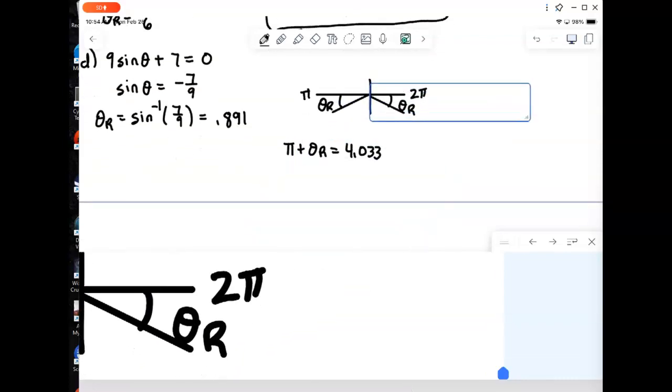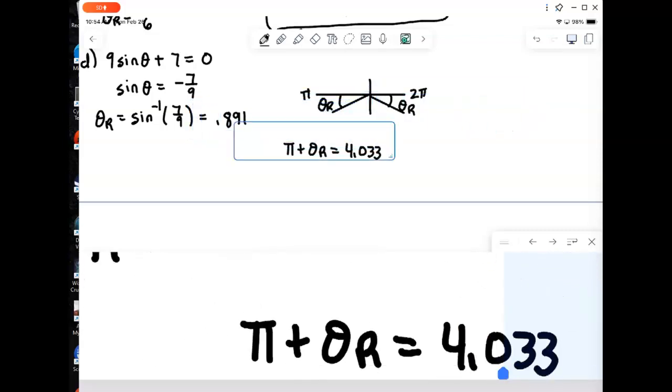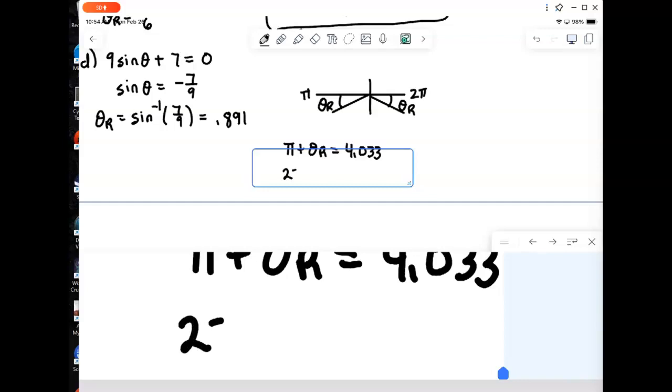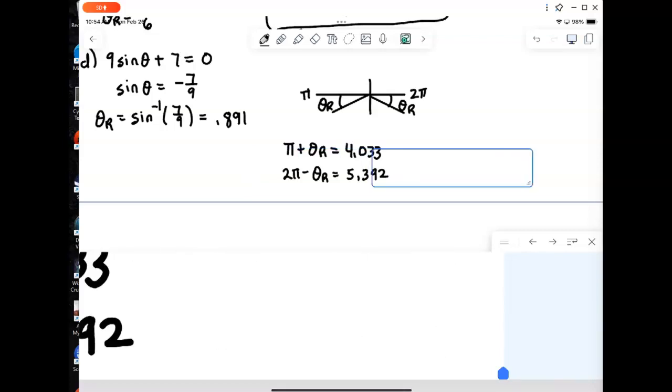And then the other one, we're short of 2 pi. So it's going to be 2 pi minus that, 0.891. This gives me 5.392.